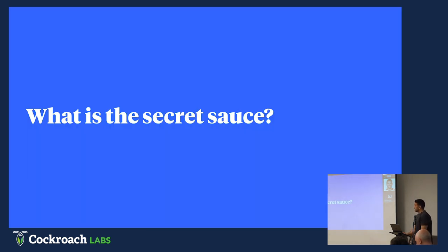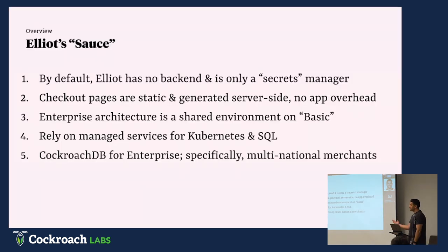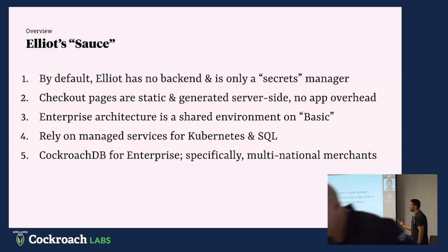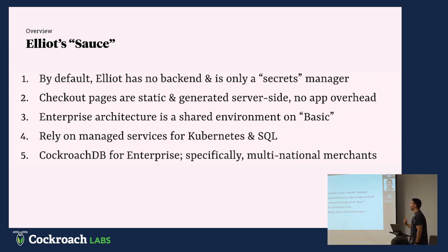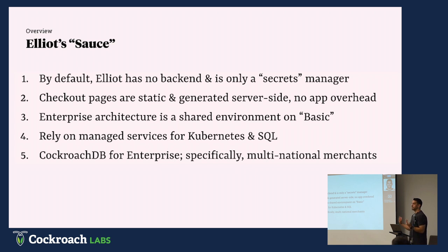Really quick on our secret sauce — there are essentially five things. By default, Elliott actually has no back end and operates truly as middleware and a secrets manager. We just have configuration files and allow a simple UI for users to create these really cool checkouts. Number two: our checkout pages are static. We generate them server side and the consumer-facing shopping experiences have no app overhead — they're just static pages that sit on global CDNs, created when the user creates the checkout.